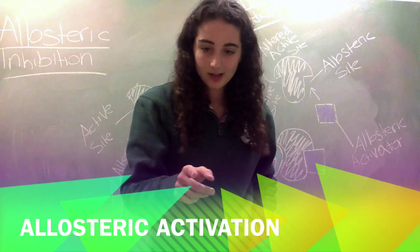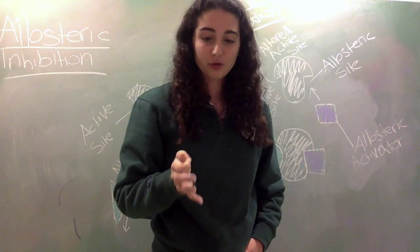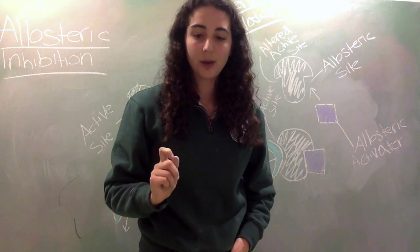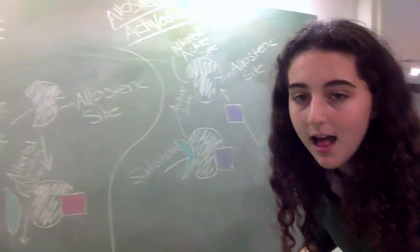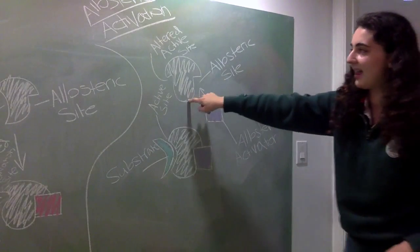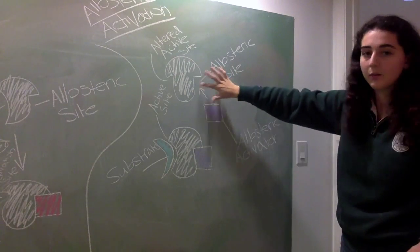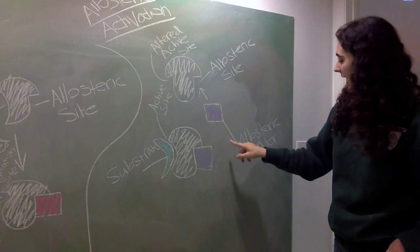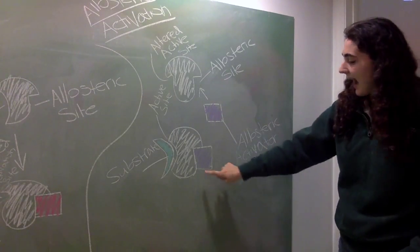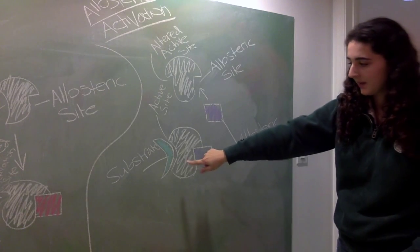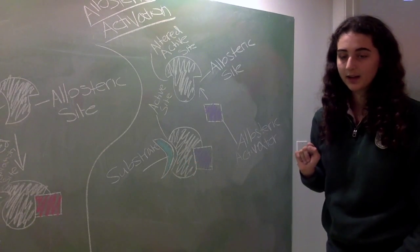Allosteric activation is where activators bind to the allosteric sites, causing a structural change that increases the enzyme's desire to bind to the substrate, thus promoting enzyme functions. So this is my other lovely diagram, where you have your enzyme and the altered active site, and then you have your allosteric site, which is here, and you have an allosteric activator, which is this purple thing. Once the allosteric activator binds to the enzyme, the active site changes its shape, thus allowing the substrate to bind to it, and have a reaction. Yay!